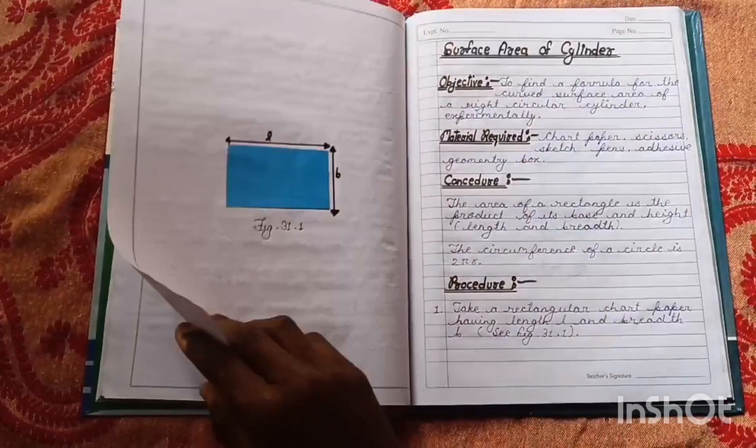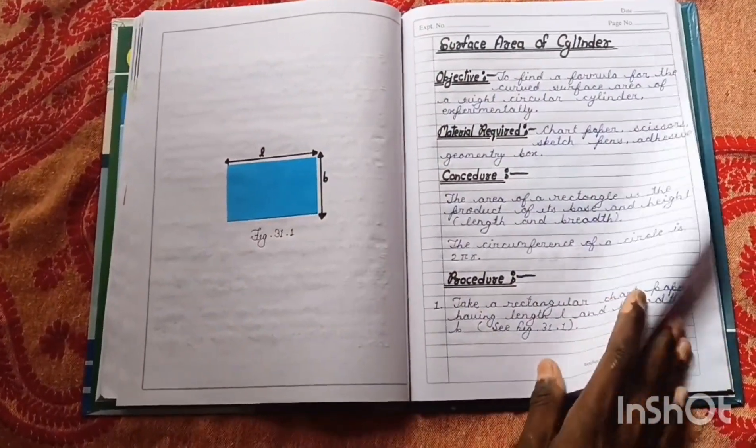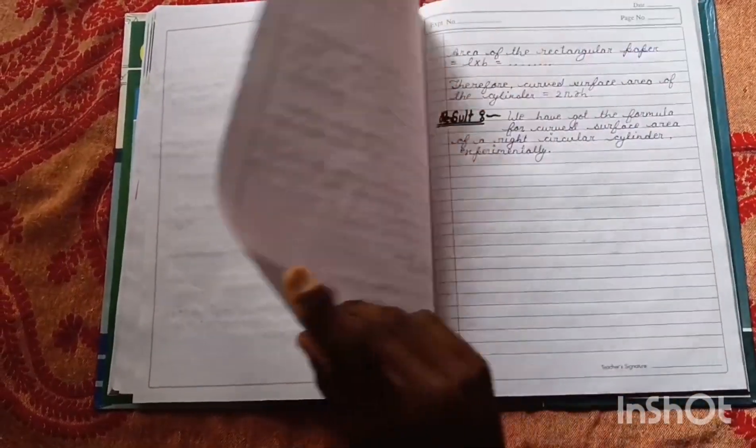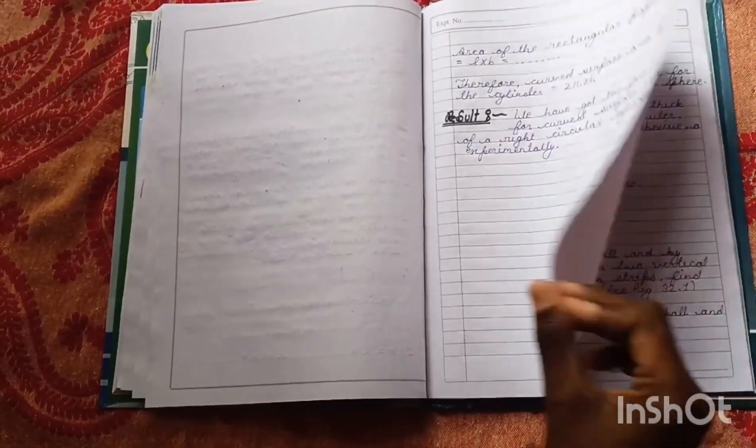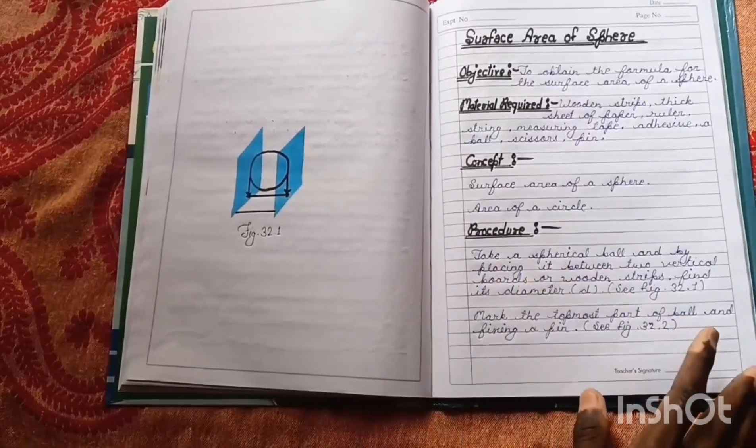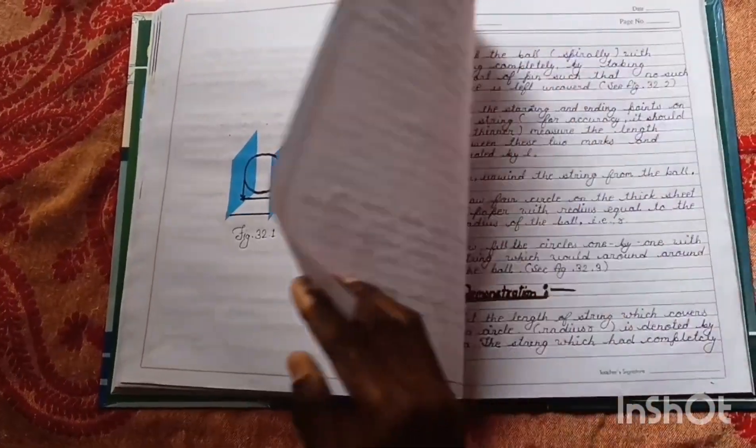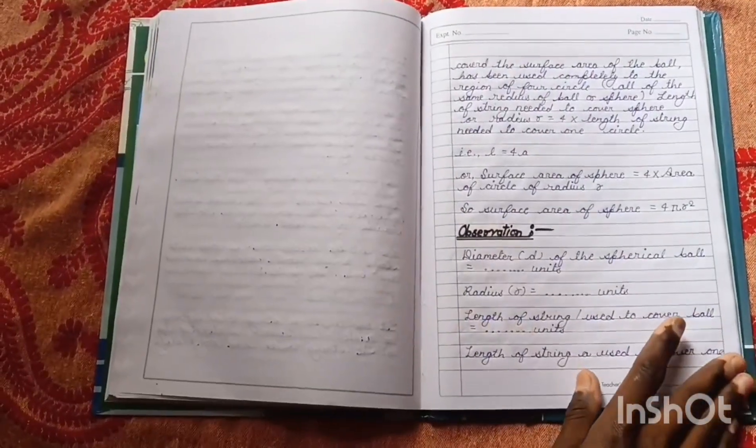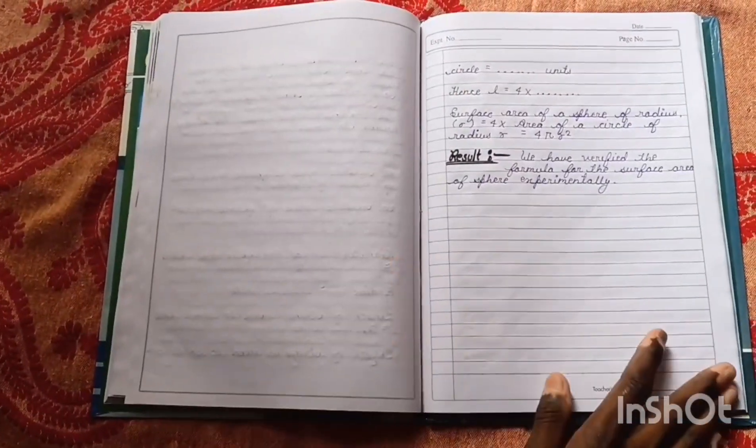Results, Surface Area of Cylinder. Results. And Surface Area of Sphere. Demonstration, Observation, and Results.